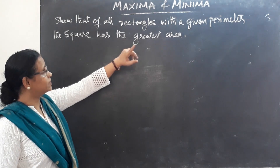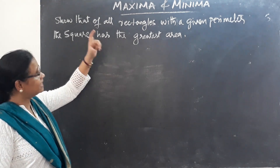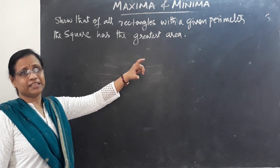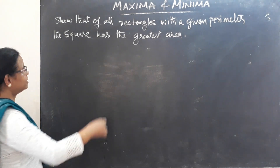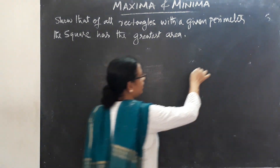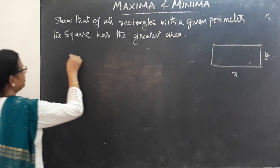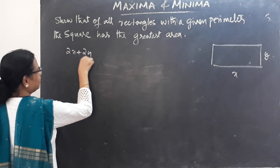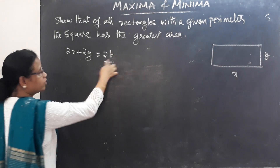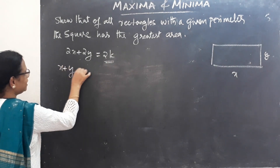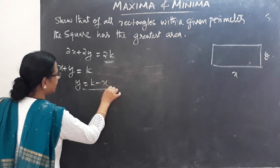Show that of all rectangles with a given perimeter, the square has the greatest area. We have a rectangle with sides x and y. The perimeter is 2x plus 2y equals 2k, so x plus y equals k, which gives y equals k minus x.